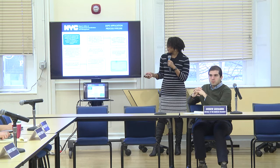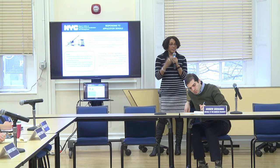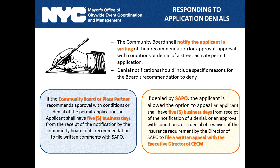If you deny an applicant, it's automated — whatever you put in the denial field is sent to the applicant. They have five days to address it in writing directly to me. If I also deny them, they have the ability to appeal my denial to my executive director. If the final answer is no, it's no. If the final answer is yes, they can move forward with the event.